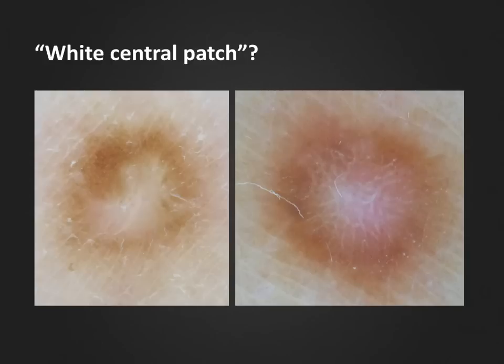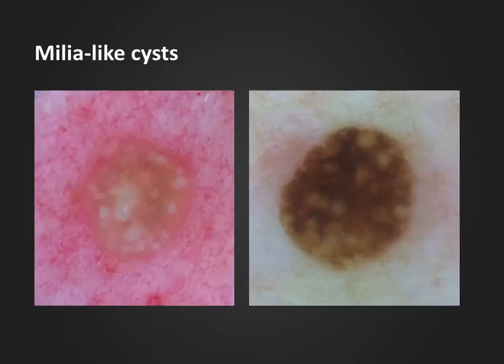Here we have two dermatofibromas. These aren't difficult cases, and most dermoscopists would agree that we have a peripheral light brown pigment network surrounding a central white patch. But look closely. In the case on the left, the central patch has a rather homogeneous white color. However, in the second case, we actually see white lines almost forming a network. Nevertheless, we will probably end up classifying this as a central white patch because we have made up our mind on the diagnosis of a dermatofibroma due to the nature of the general pattern of the lesion. But let's return to the list and look at some more examples of white structures in dermoscopy.